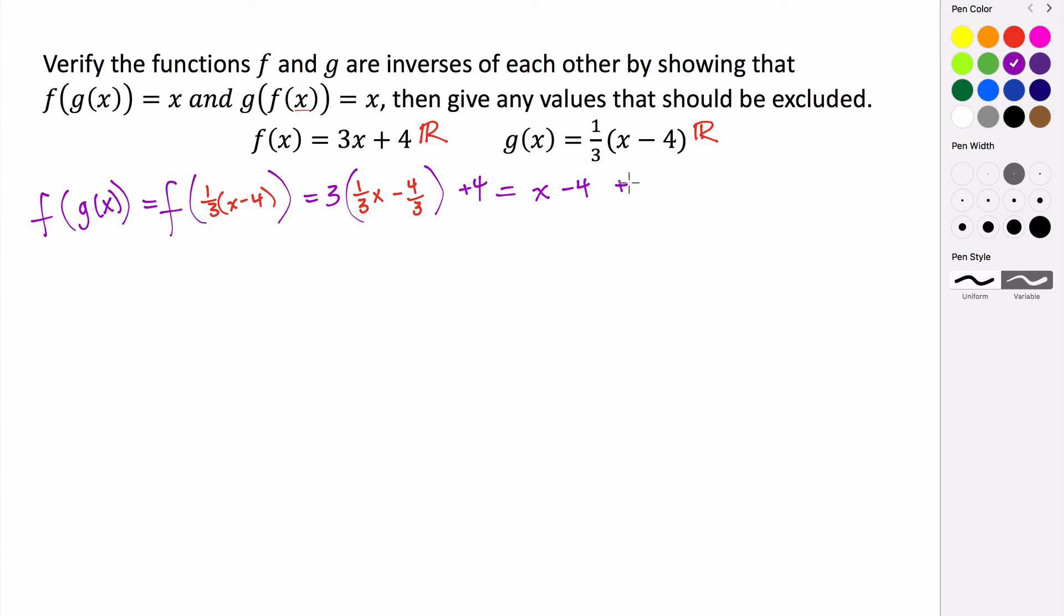And then all of that is being added to four. And we can see that this negative four and this positive four cancel. And so we end up with just x. So we see that f of g of x is just x. So that's this first one verified.